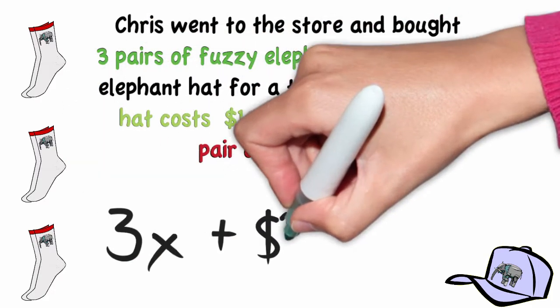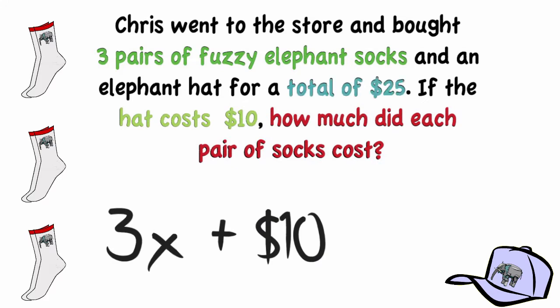He also bought a hat for $10 and the total was $25. So the equation for this problem would be 3x plus 10 is equal to 25.